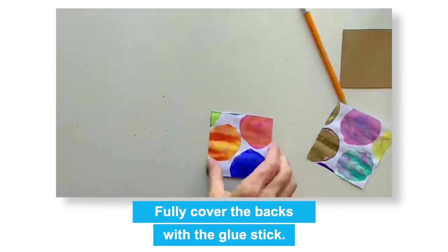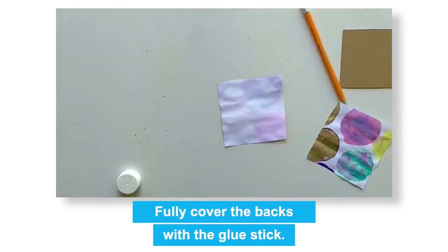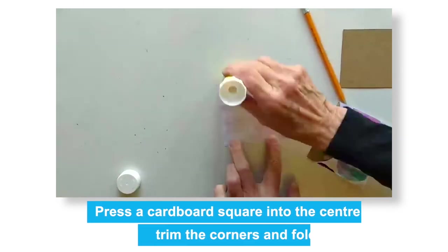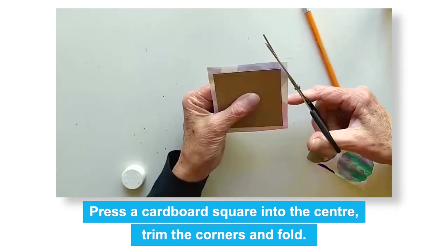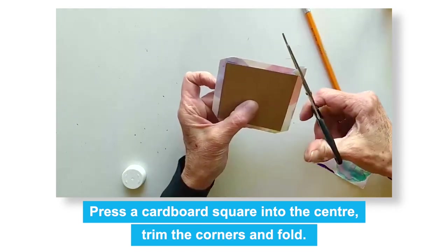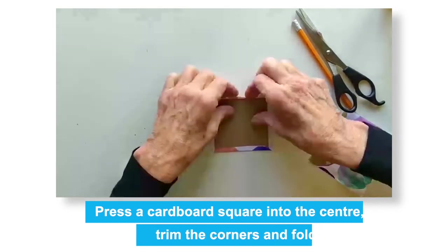Cover the back of the paper with glue. Go right out to the edges. Press a cardboard square down in the center of the paper. Trim the corners. Then fold the edges of the paper over the cardboard and press down firmly.